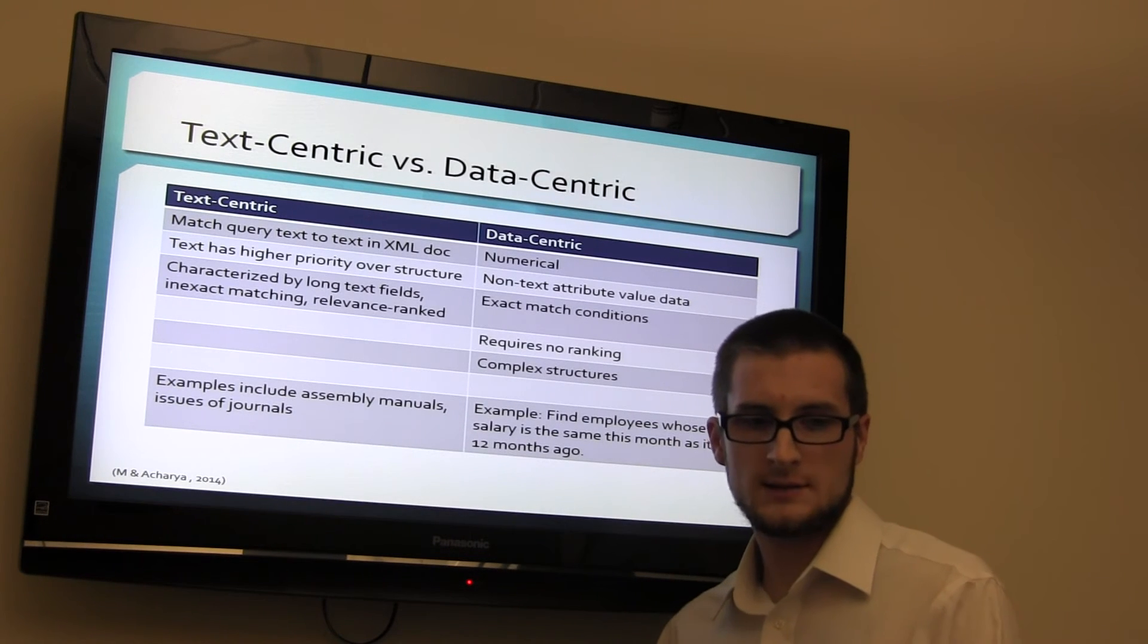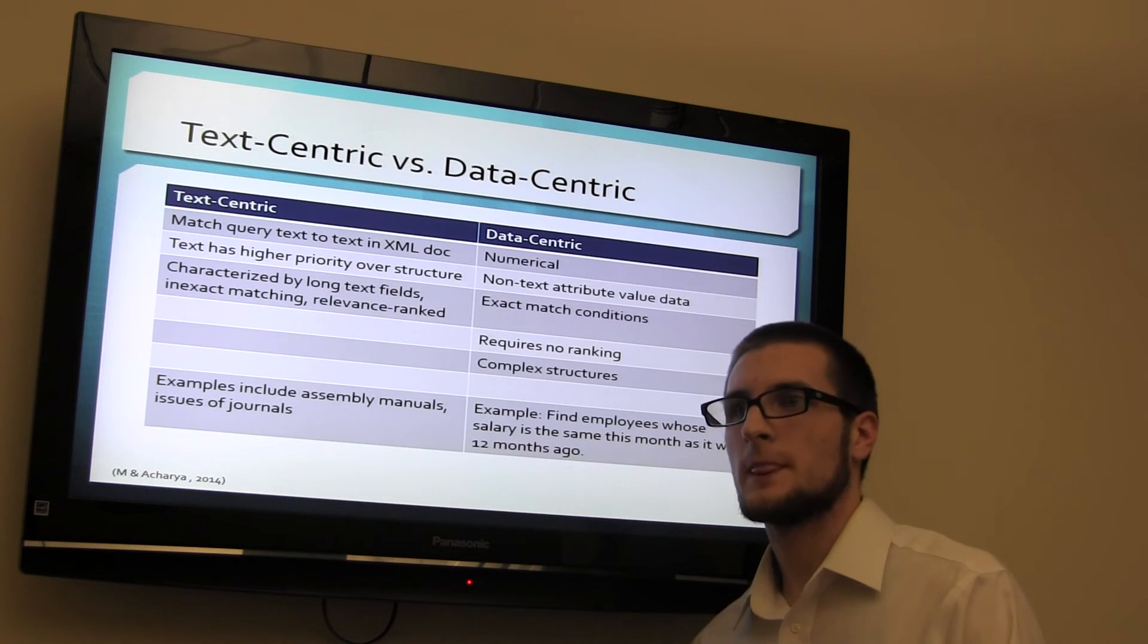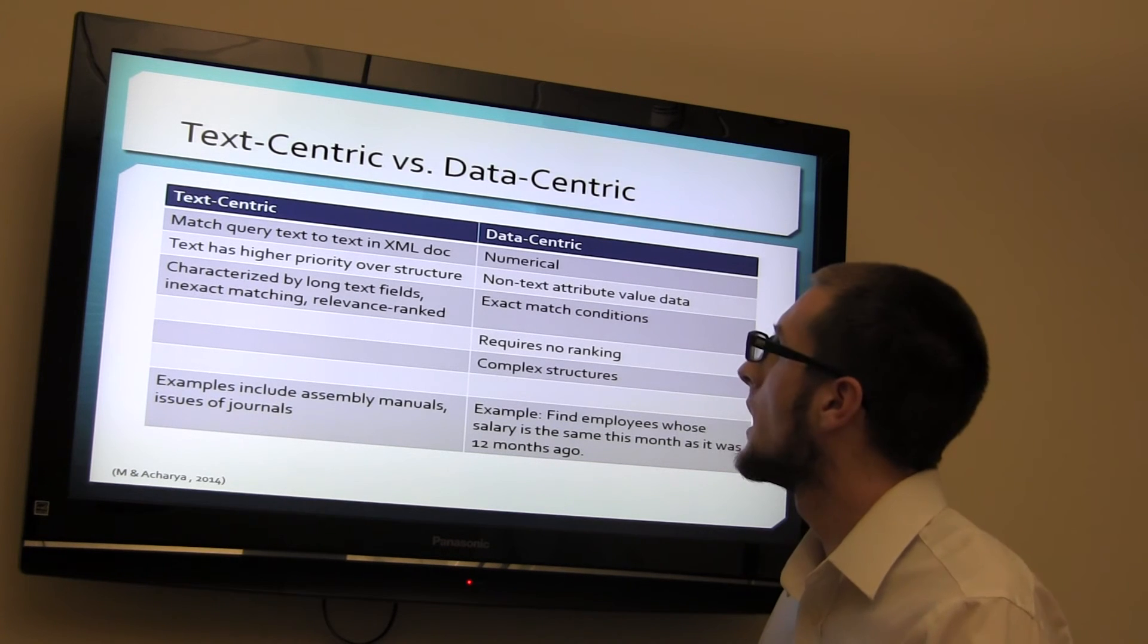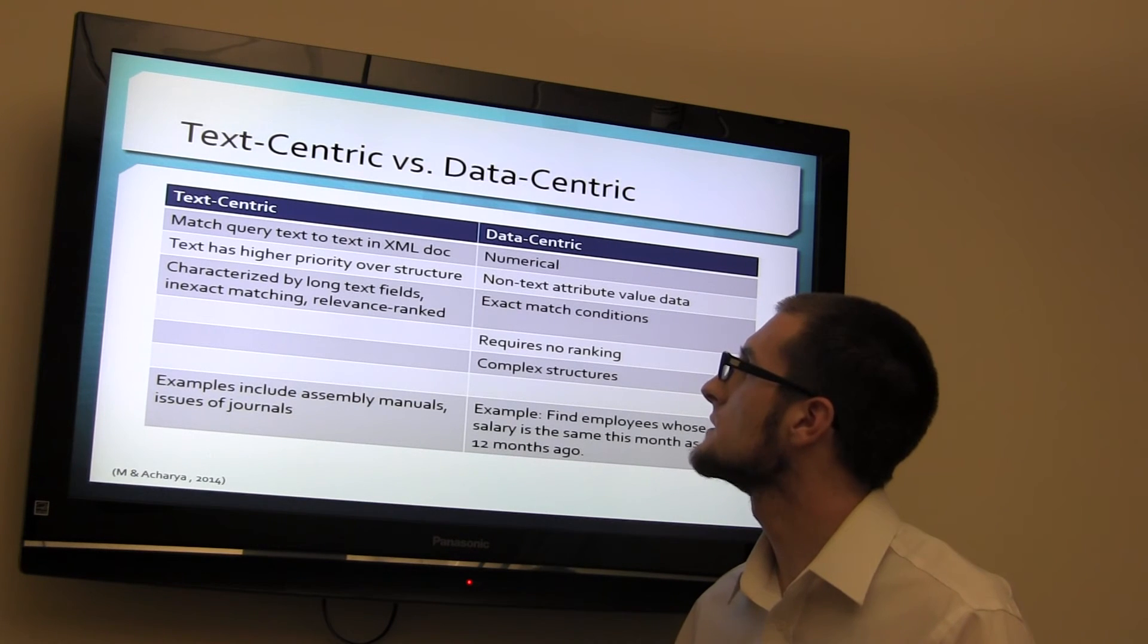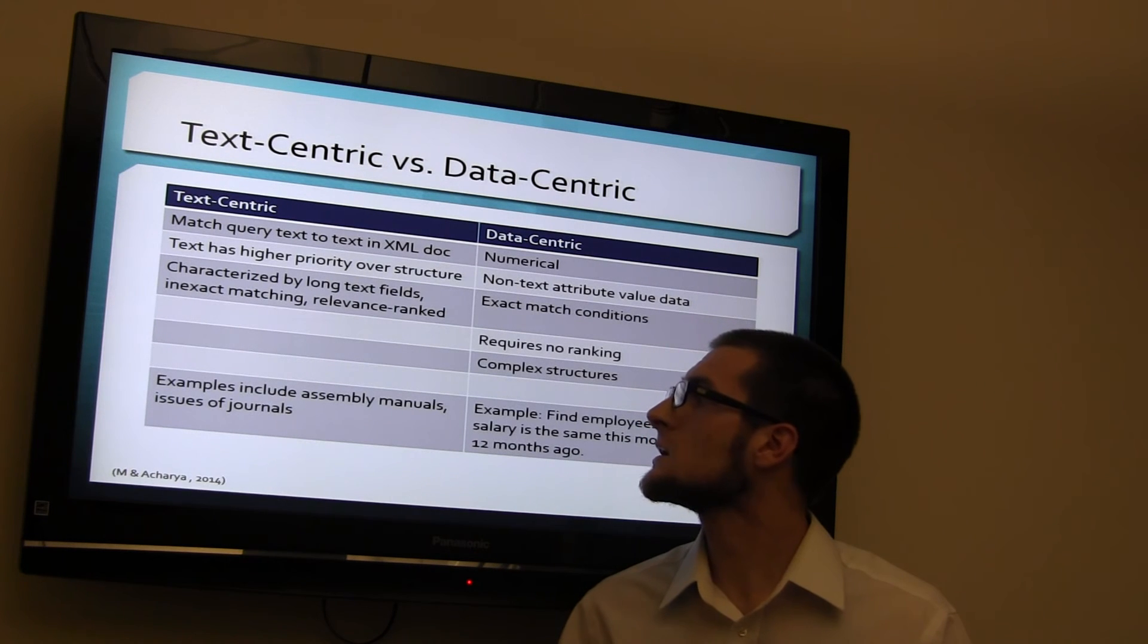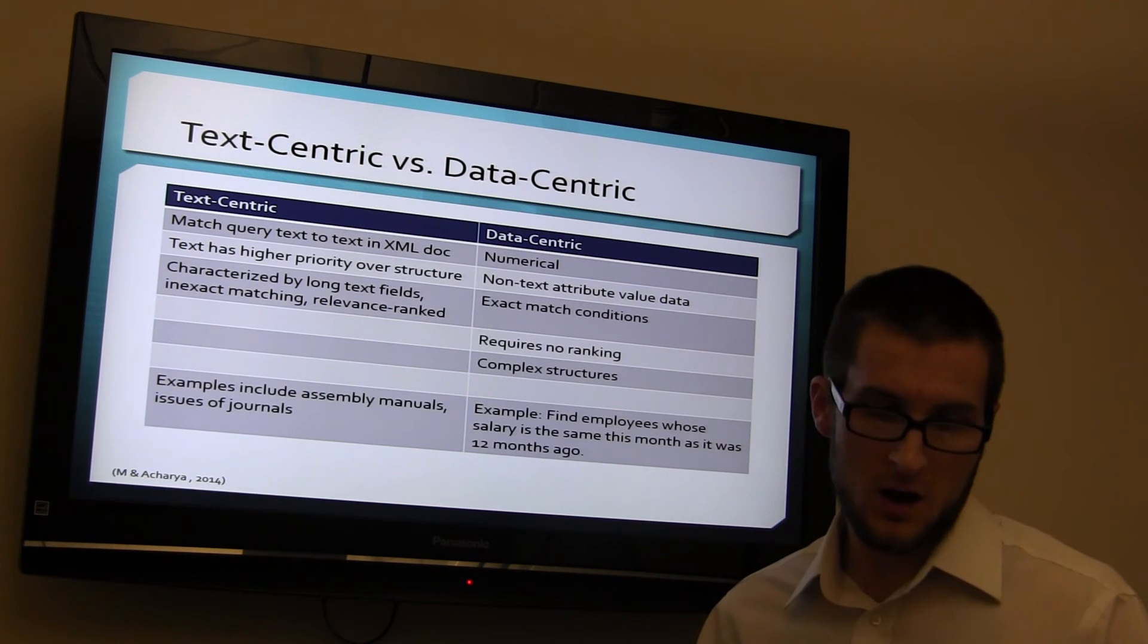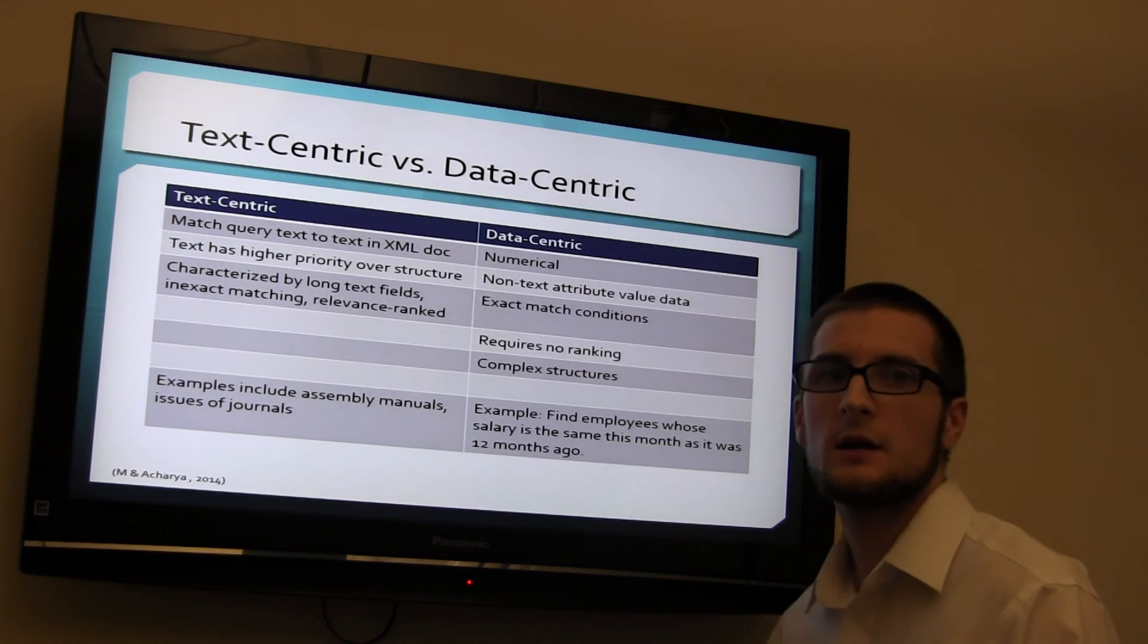Stepping it back, we're going to go text-centric versus data-centric. These are two types of information that can be used in XML retrieval. Text-centric focuses on matching a query text to text in the document and text only. Text is a higher priority over the structure, which data-centric deals with. Characterized by long text fields, inexact matching, and relevance ranked. And the example of this would be like an article or issues in a journal like I spoke of before. It's just text. The metadata is just text.